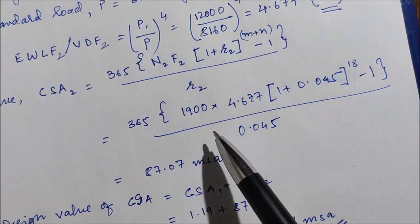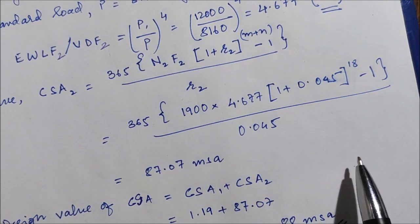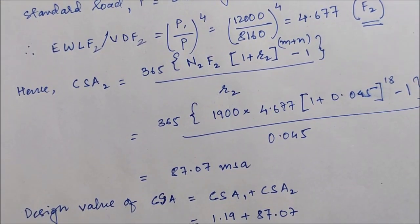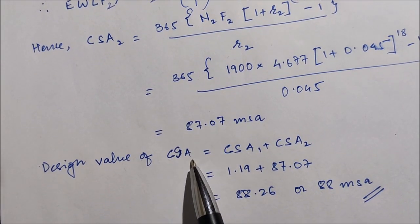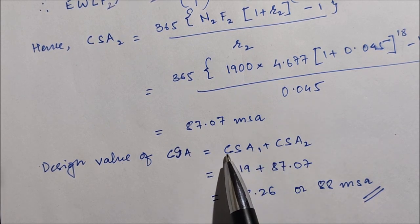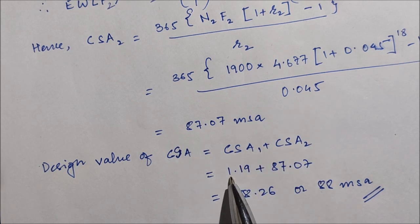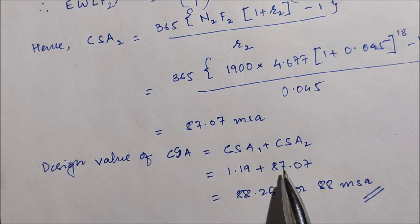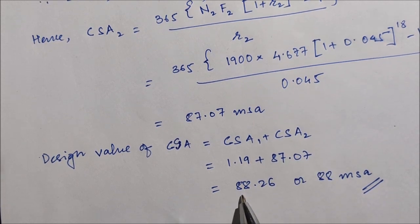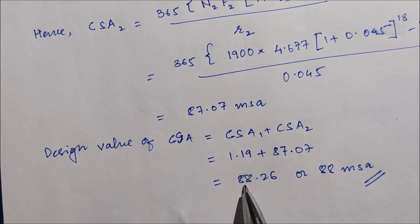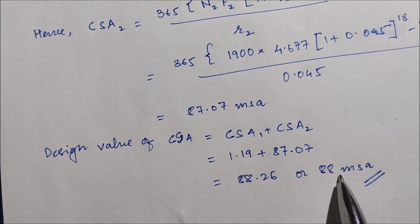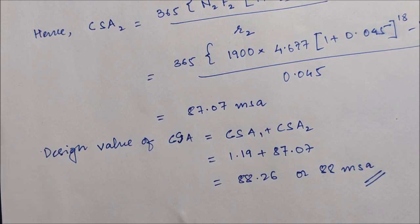The question asks us to calculate the total CSA for the pavement, which comprises two vehicle classes: 5600 commercial vehicles per day and 1900 heavy commercial vehicles per day. The total design value of CSA is CSA1 plus CSA2 — that is 1.19 MSA plus 87.07 MSA — giving a total cumulative standard axle value of 88.26 MSA, approximately 88 MSA. Thank you everyone.